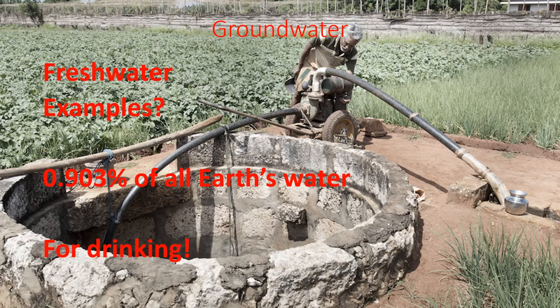We do use groundwater for drinking — this is one of the most important sources of drinking water that we have on earth. We just drill wells down into the groundwater and pump the water out, or you can use a spring. A spring is where the water table intersects with the surface and so the groundwater comes out to the surface all on its own. So yes, groundwater is a very important source of drinking water.